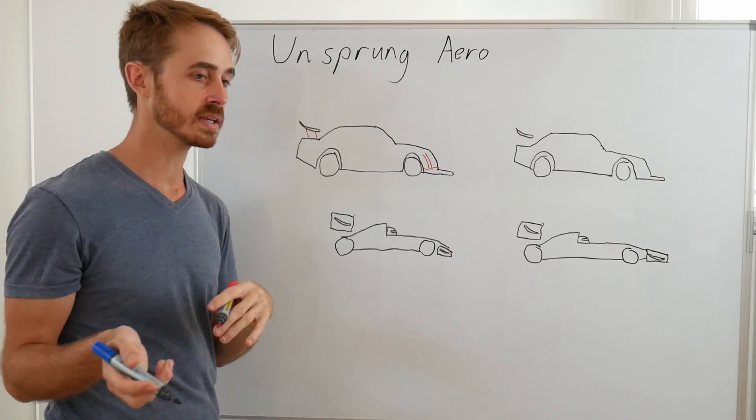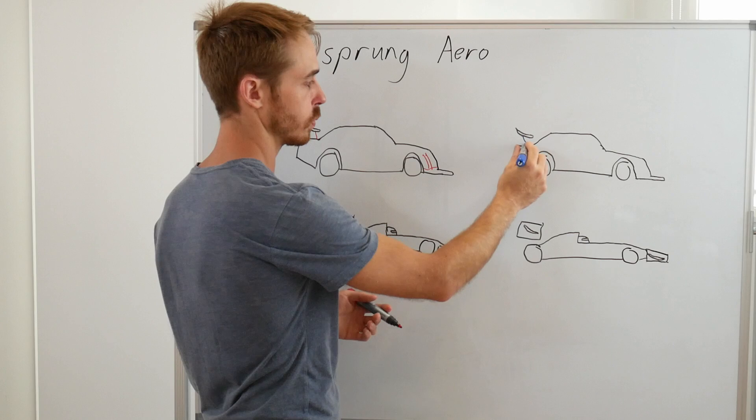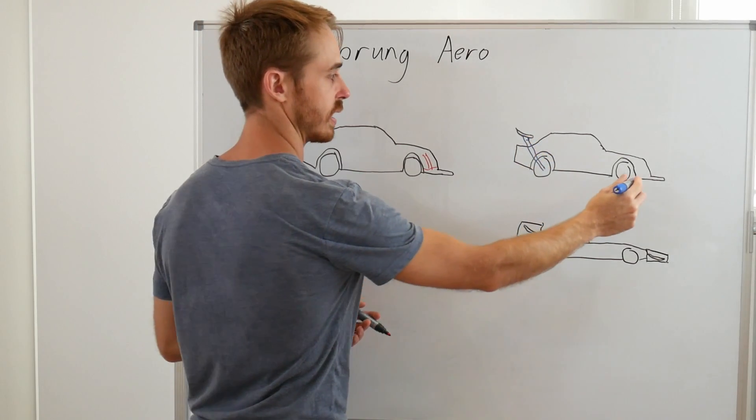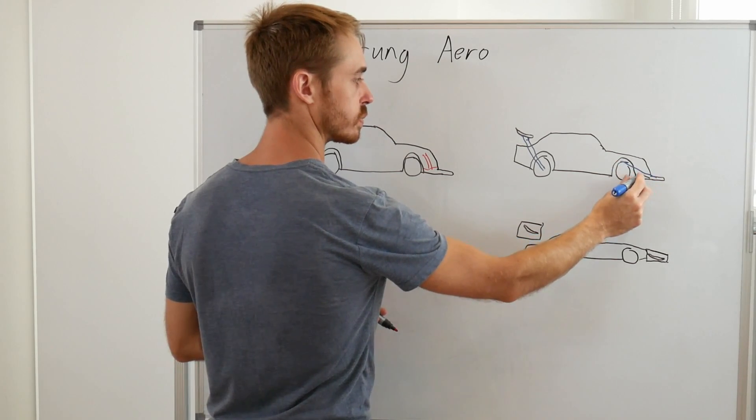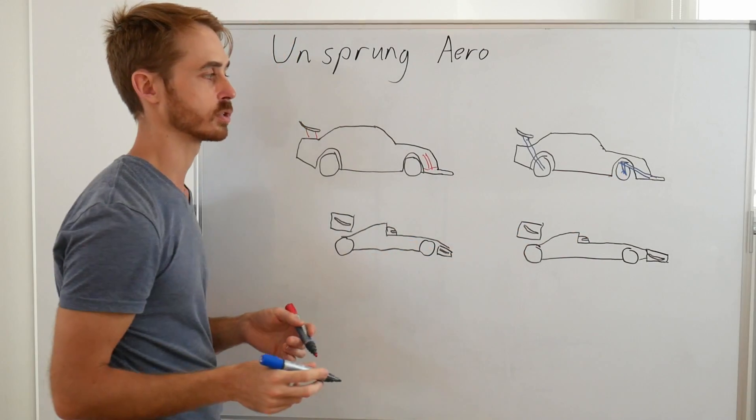Now compared to an unsprung aero car, what we do there is we pass the loads from the wing directly down to the outer suspension there, and we'll tie the loads from this splitter back to a rocker, which will load the front suspension there.